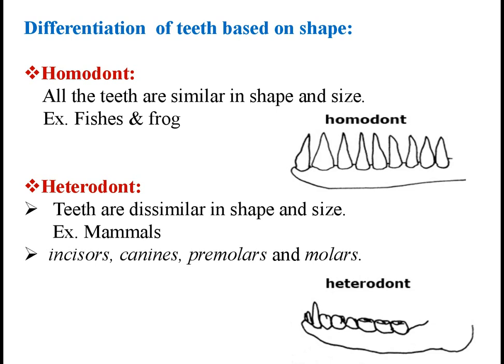We can classify teeth based on shape, structure, attachment and succession. First, we shall study types of teeth based on shape or morphology. There are two types of teeth in animals based on shape: homodont and heterodont. Homo means same, odont means teeth. In vertebrates other than mammals, the teeth present are similar in shape and size, as seen in the diagram. Hence, known as homodont or isodont. Such type of teeth are found in fishes and frogs.